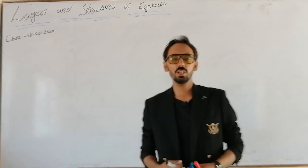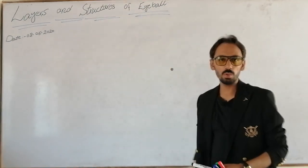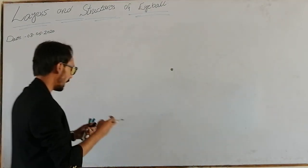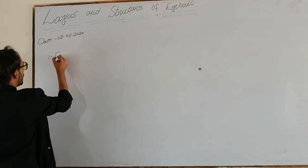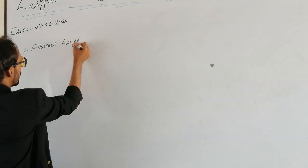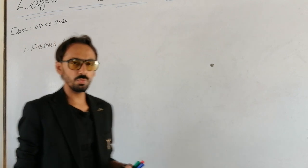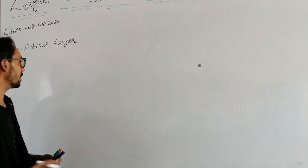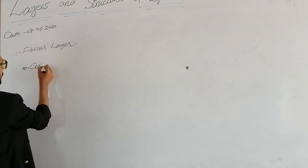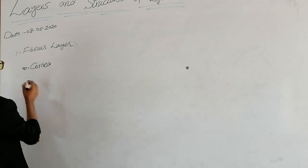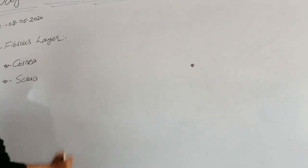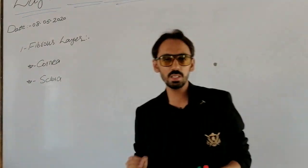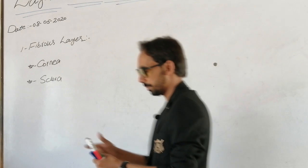Today our topic of discussion is the layers of the eyeball and different structures of the eyeball. We will discuss a short introduction about the different structures and layers. The eyeball has three different layers. The first layer is called the fibrous layer, which is the very first and very tough layer of the eyeball. It consists of two basic and very important structures: the cornea and the sclera.